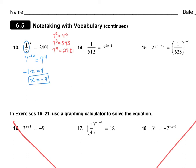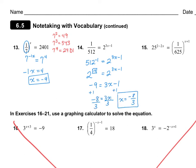For number 14, I move 512 from the denominator by writing it as 512 to the negative 1, equaling 2 to the power of 3x minus 1. Using my calculator, 2 to the power of 9 equals 512, so with the negative 1 it becomes 2 to the negative 9. Setting exponents equal: negative 9 equals 3x minus 1, and solving gives x equals negative 8 over 3.